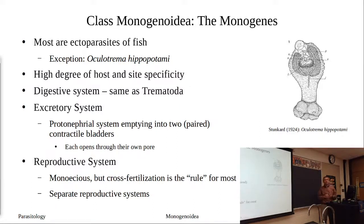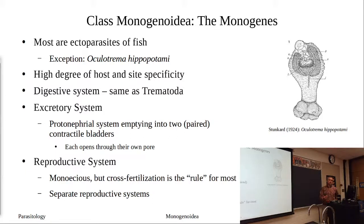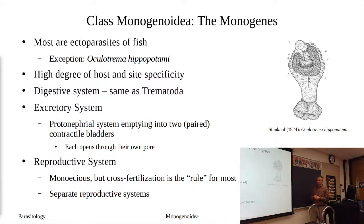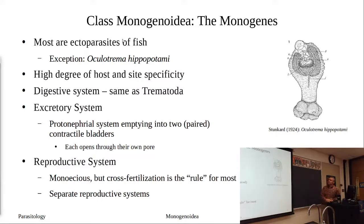In this group, cross-fertilization seems to be the rule. Even though both male and female systems are present, you rarely see a single individual replicate with itself — they find another individual and cross-fertilize. This is probably because the reproductive systems have separate openings: the male system has one opening, the female system has another, making self-fertilization difficult. In monogeneans, the cirrus and accessory pieces are separate from the female system.